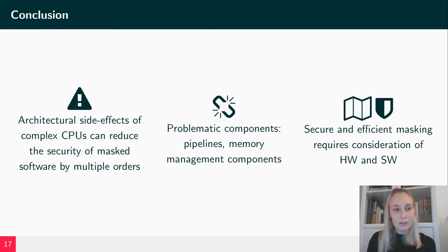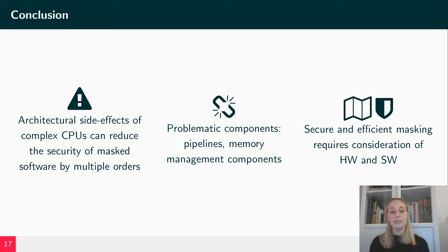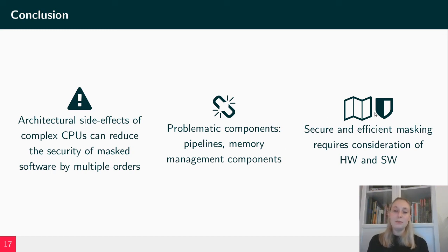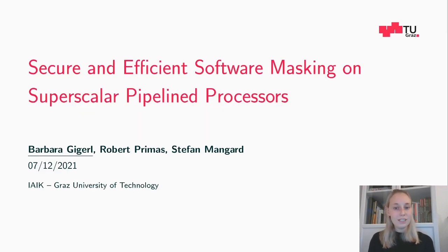This leads me to the end of my presentation. We have discussed that architectural side effects of complex CPUs can reduce the security of masked software by multiple orders, due to problematic components that cause big problems (combining more than two shares) or small problems (combining up to two shares) — mostly pipeline and memory management components. However, we showed that it is still possible to have secure and efficient masking when carefully considering both hardware and software. Thank you all for listening.